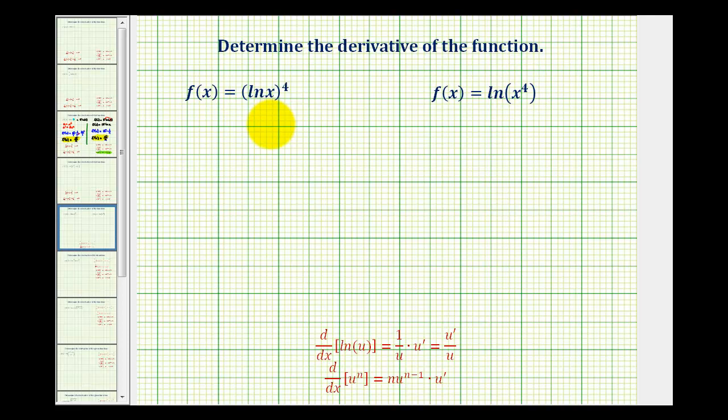So we will have to apply the chain rule to differentiate both of these functions, and the key is identifying the inner function and letting that equal u. So for this function, the inner function is natural log x. So we'll let u equal natural log x. Therefore u prime, or du dx, is going to be one divided by x.